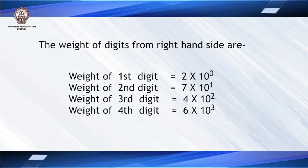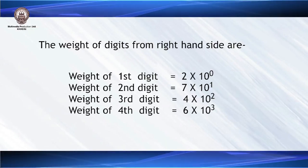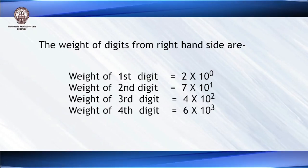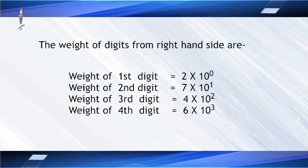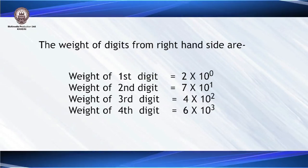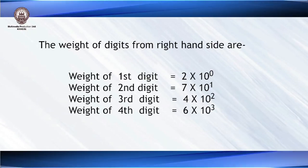We use base 10 since the decimal number system has 10 unique digits. Similarly, the weight of the second digit is 7 into 10 to the power 1, the third digit is 4 into 10 to the power 2, and the fourth digit is 6 into 10 to the power 3. Summing all these gives us a total of 6472.